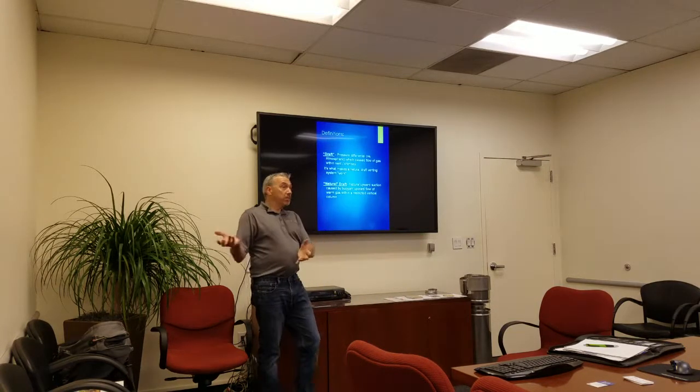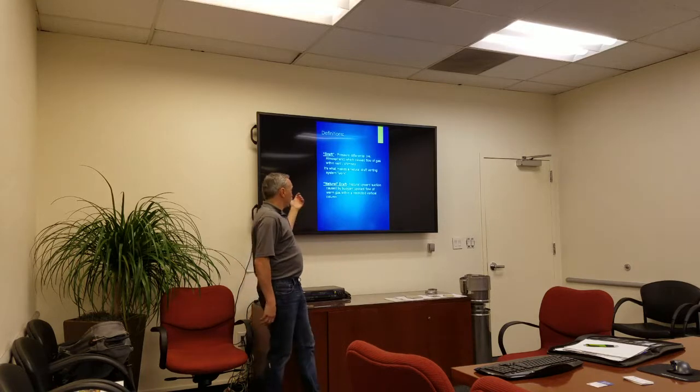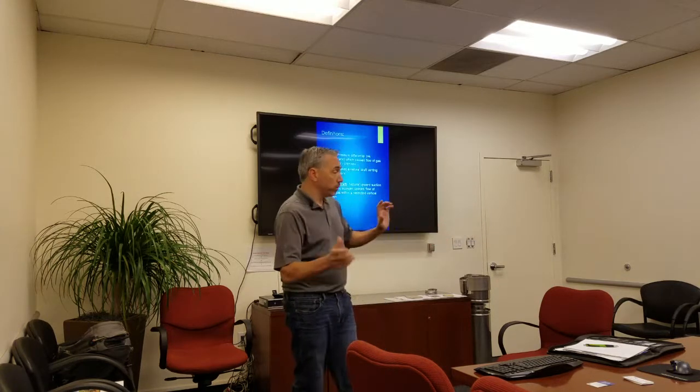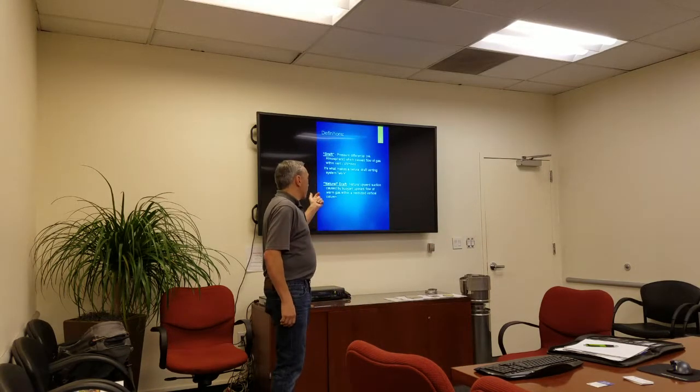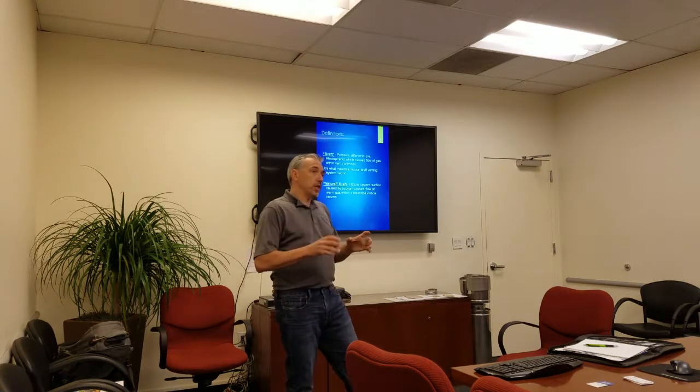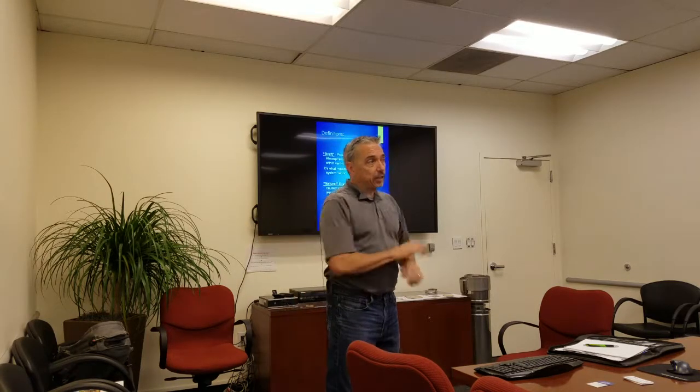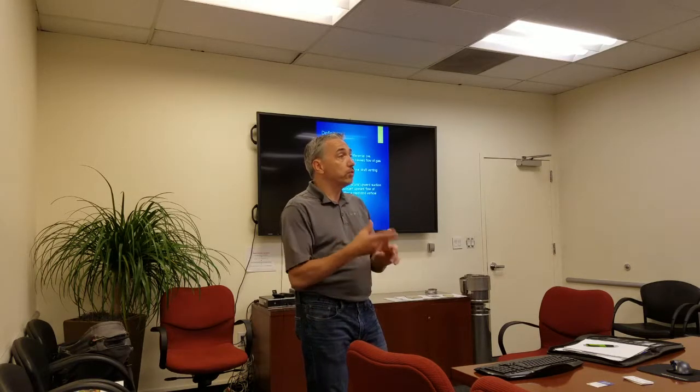Draft is the chimney effect — simply put, that's what draft is. Natural draft relies solely on the heat coming off of the appliance. In a natural draft appliance, it'll be a category one vent and you would use type B vent. With the increase in efficiency, 83% efficiency is the absolute maximum you can achieve on a natural draft boiler. That 17% has to be left over to make sure the flue system works.